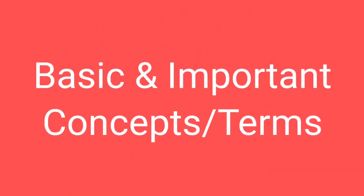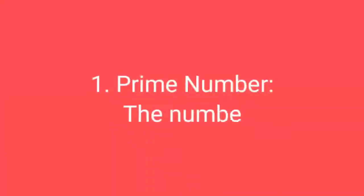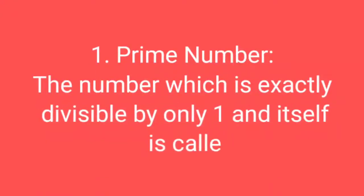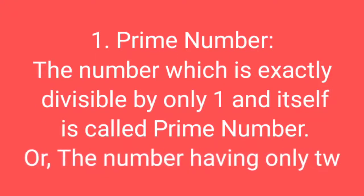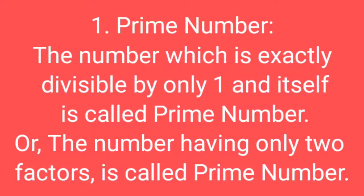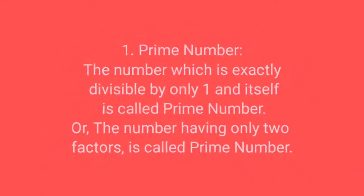First of all, let's know about prime numbers. What is a prime number? The number which is exactly divisible by only one and itself is called a prime number. You can also say: the number having only two factors is called a prime number.